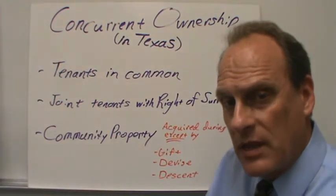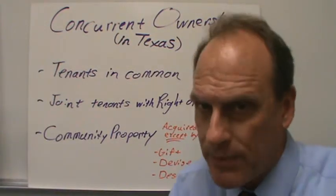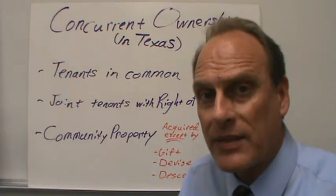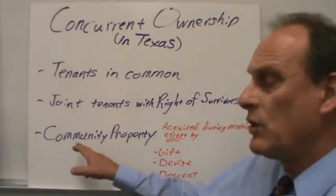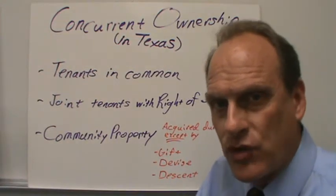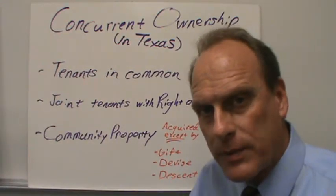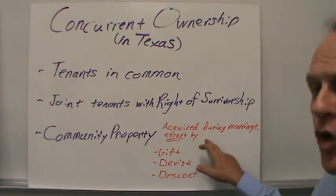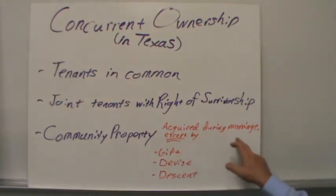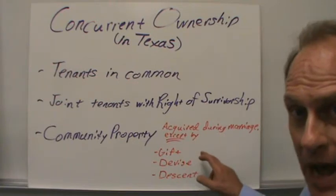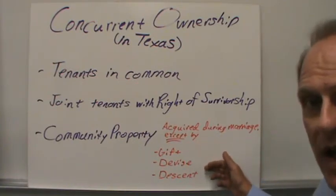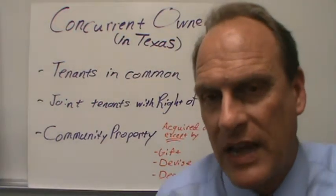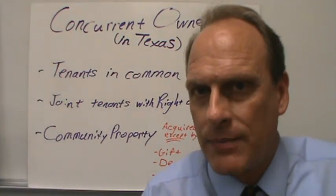If it's not community property, then it's going to be separate property. Since separate property is solely owned, we'll set that aside. In community property, each spouse has an equal share. Community property is all property acquired during the marriage, except by gift, devise, or descent. So if someone during a marriage receives a gift, that's their separate property.